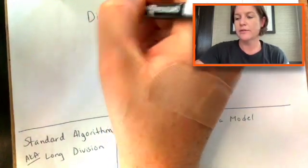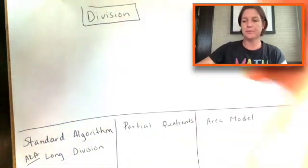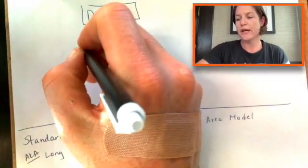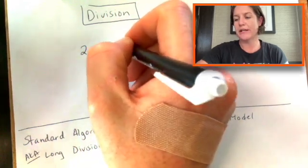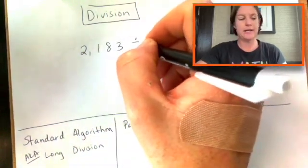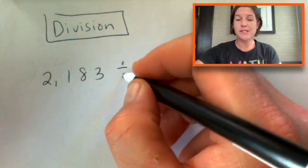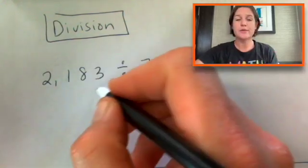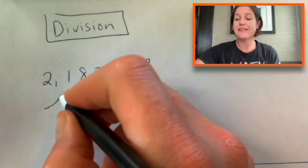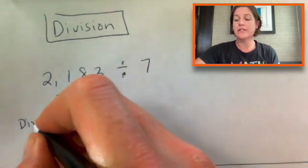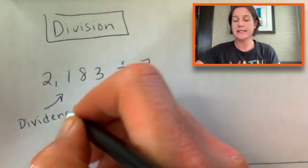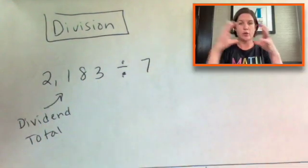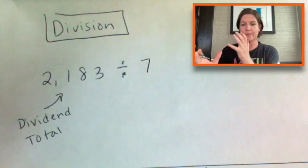All right. Division. Let's come back up here. Let's say that we had 2,183 divided by seven. Let's all get on the same page about the parts of division. So right here, 2,183, this is referred to as our dividend. It's also the total. It's the total that we are separating.